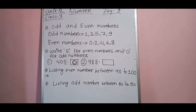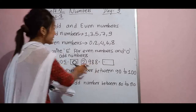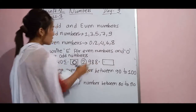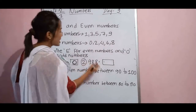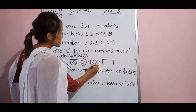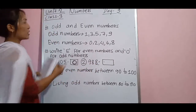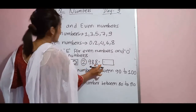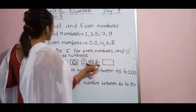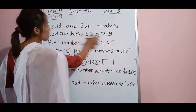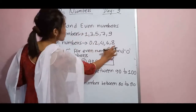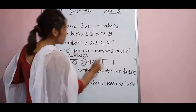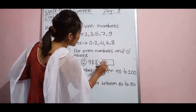After that there is 988. In 988, see the last digit — it is 8. Since 8 is an even number, the whole number 988 becomes an even number, so you have to write E.